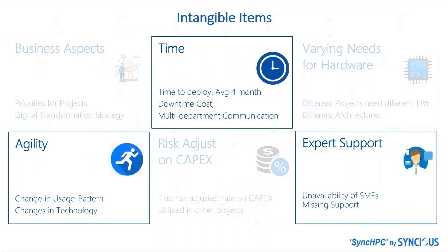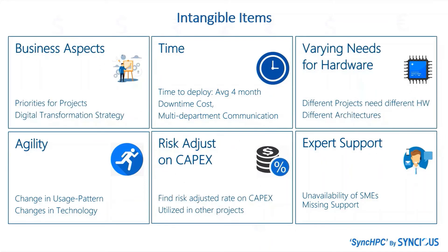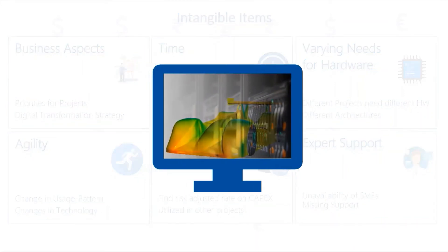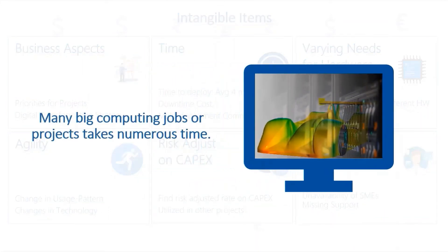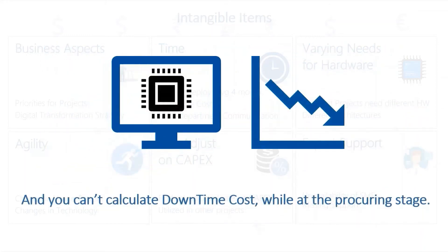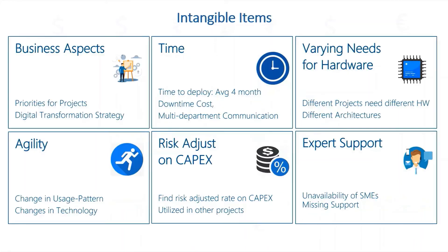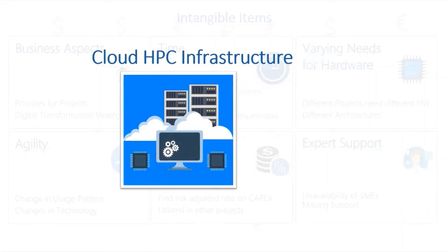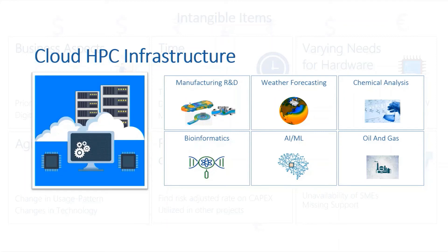These are very important aspects that you must consider while procuring the on-premise HPC system. But some projects are very important and cannot wait three to four months for the on-premises deployment of hardware. Teams also want to have new hardware as technology changes over time. Last but not least, the downtime cost and availability of expert support can impact the overall productivity of teams. So an organization can adopt cloud based on these intangible aspects of the business. Today many organizations from various industries are adopting this cloud strategy for their agility to do business from anywhere, at any time, on any scale.